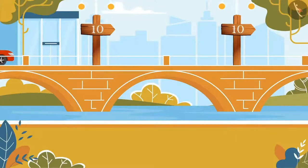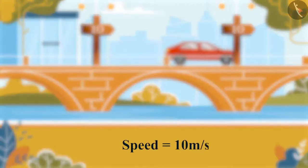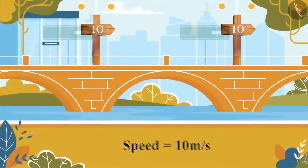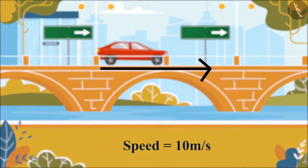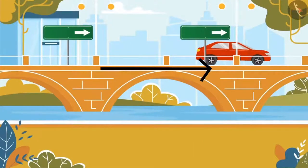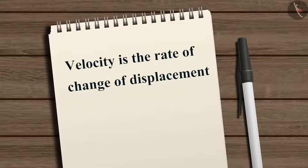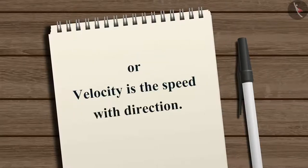Consider an object moving at a certain speed — say, 10 meters per second. Along with the speed, if we also specify the direction of motion, then the whole quantity is known as velocity. Velocity is the rate of change of displacement of an object, or simply, velocity is speed with direction.